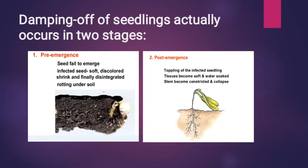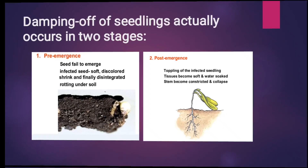The life cycle of damping-off disease actually occurs in two stages: pre-emergence and post-emergence. In the pre-emergence stage, the seed fails to emerge — infected seeds become discolored, shrink, and disintegrate. In the post-emergence stage, there is toppling of the infected seedling, and the tissues become soft, water-soaked, and collapse.